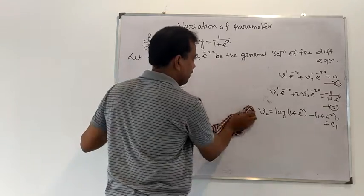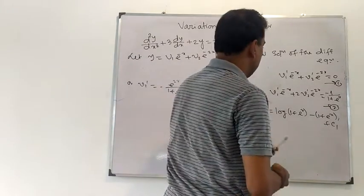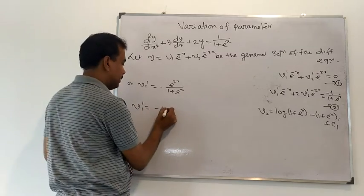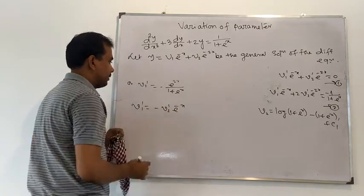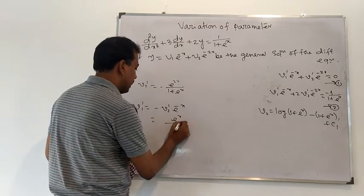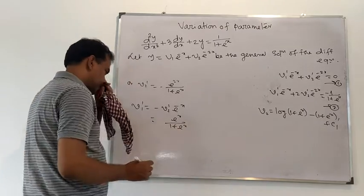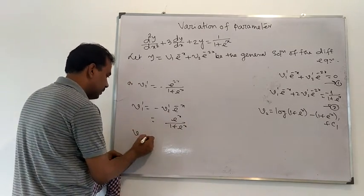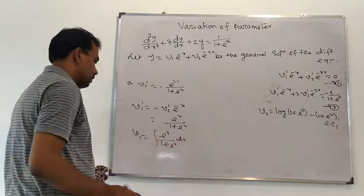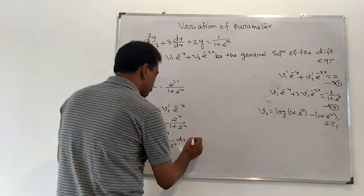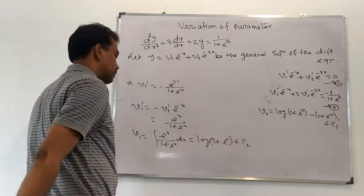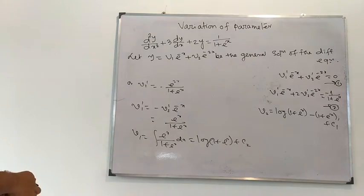Now putting the value of v2' back into equation 1, we get v1' = −v2'·e^(−x), which simplifies to v1' = e^x/(1 + e^x). Integrating, v1 = ∫e^x/(1 + e^x) dx = ln(1 + e^x) + c2, where c1 and c2 are arbitrary constants.